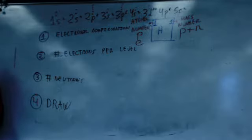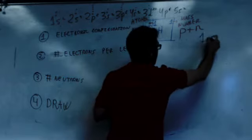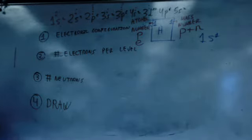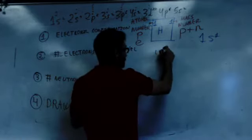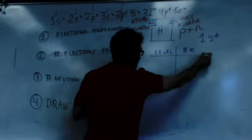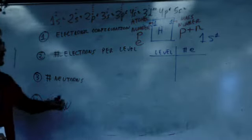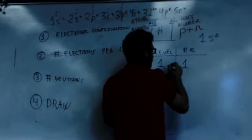Which is the electronic configuration for hydrogen? One S1. Electrons per level. I made a little table with level number of electrons. For me, electrons is an E. It has just one level with one electron on it.